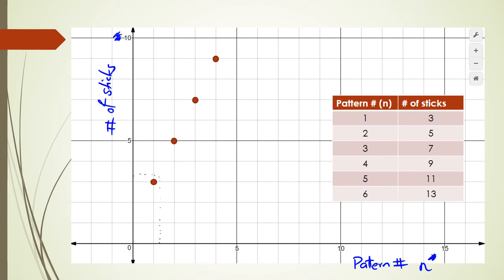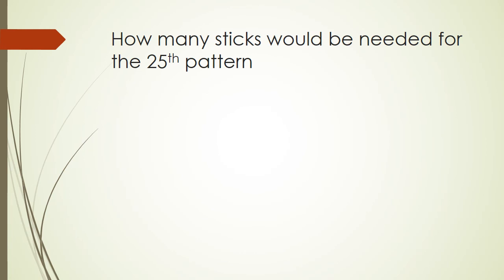Okay, so we've got the equation, and then we've got the graph. Now we go to some questions that they could potentially ask. So this question is, how many sticks would be needed for the 25th pattern? Now we actually had the equation as 2n plus 1 as the general equation for the number of sticks. So if we want to figure out the number of sticks, we could say number of sticks equals 2n plus 1.